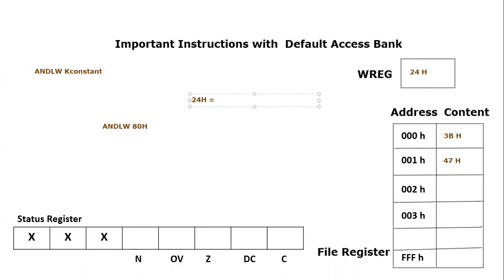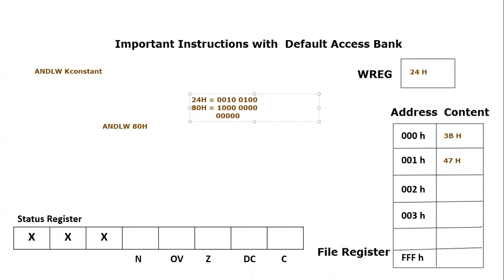Since AND is a logical operation and logical operations are always performed on binary numbers, we convert 0x24 to binary: 0x2 becomes 0010 and 0x4 becomes 0100, giving 0010 0100. Similarly, the literal value 0x80 in binary becomes: 0x8 is 1000 and 0x0 is 0000, giving 1000 0000.